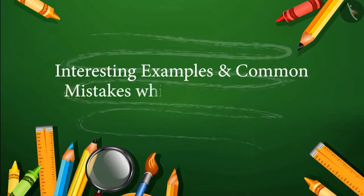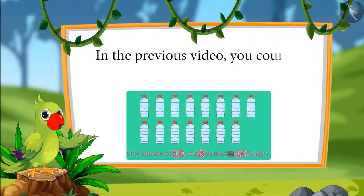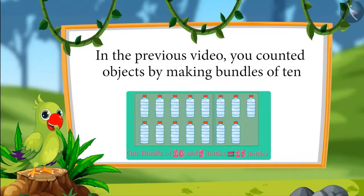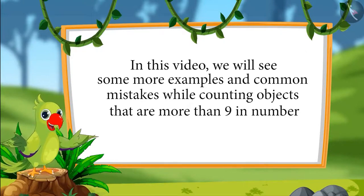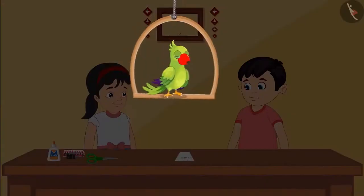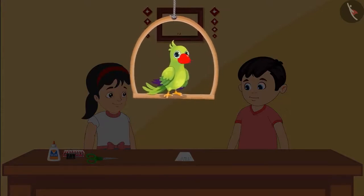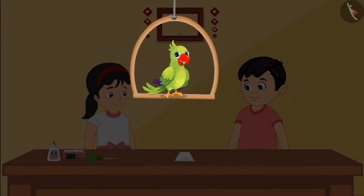Interesting examples and common mistakes while counting from 10 to 20. So children, in the previous video you counted objects by making bundles of 10. In this video, we will see some more examples and common mistakes to avoid while counting objects more than 9. Today is Pinky and Chotu's parents' wedding anniversary, and Pinky and Chotu decide to make a card. Pinky makes a list of objects needed.